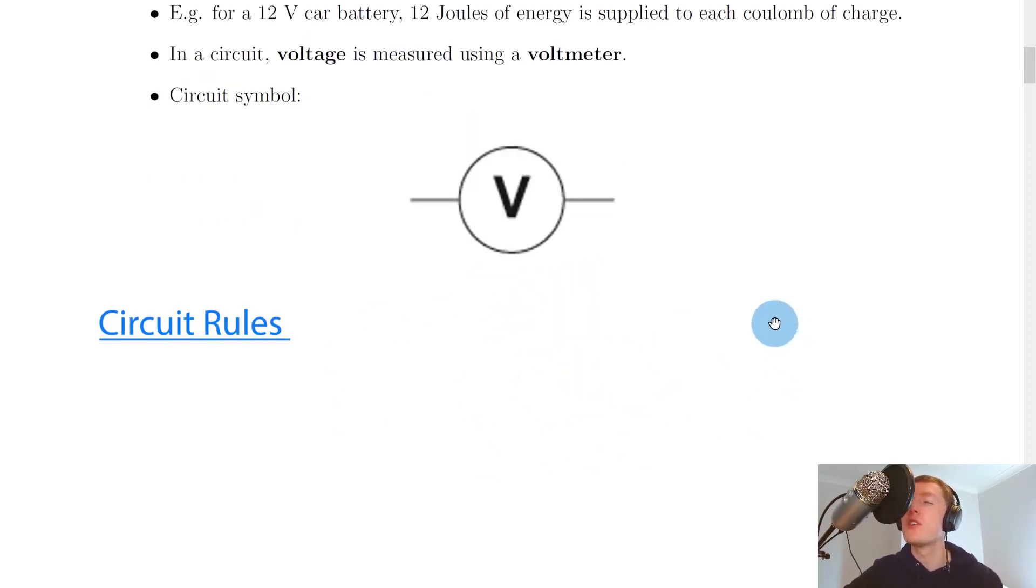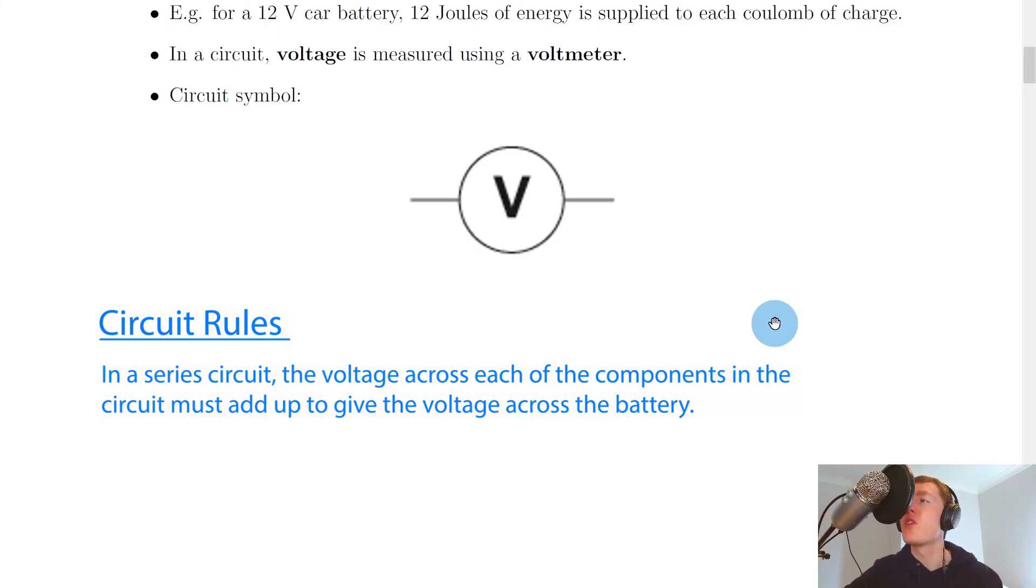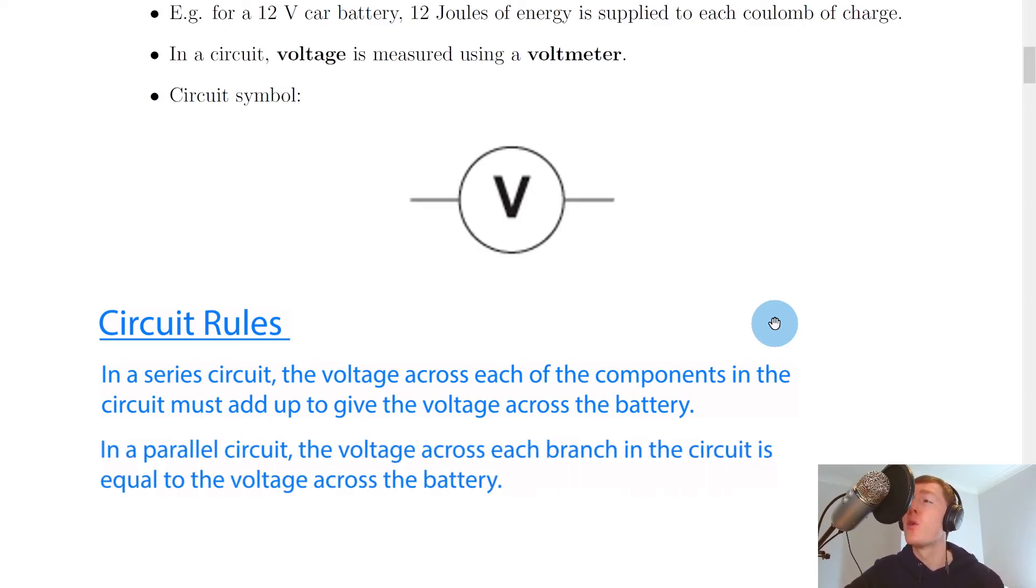Lastly, you should remember the circuit rules for voltage in series and parallel circuits. In a series circuit, the voltage across each component must add up to give you the voltage across the battery. In a parallel circuit, the voltage across each branch is equal to the voltage across the battery.